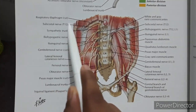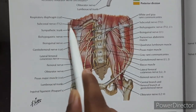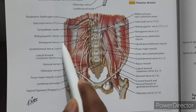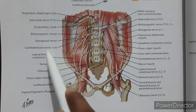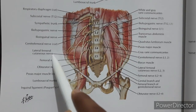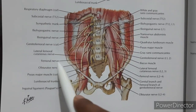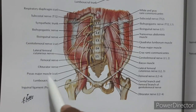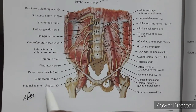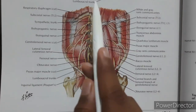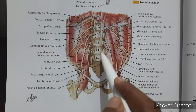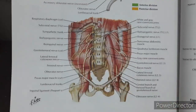Also shown are the respiratory diaphragm cut, subcostal nerve T12, and the sympathetic trunk. The diagram labels the iliohypogastric, ilioinguinal, genitofemoral, lateral femoral cutaneous, femoral, and obturator nerves alongside the psoas major muscle cut and lumbosacral trunks, with the inguinal ligament also visible. So L1, L2, L3, and L4 form the lumbar plexus.